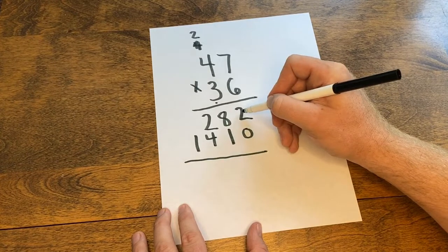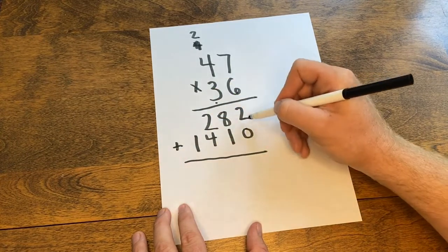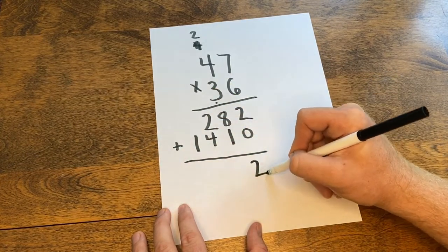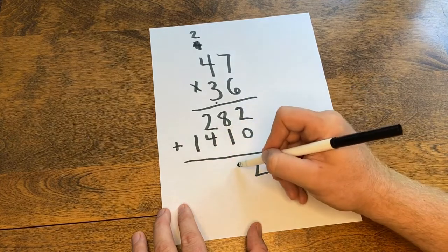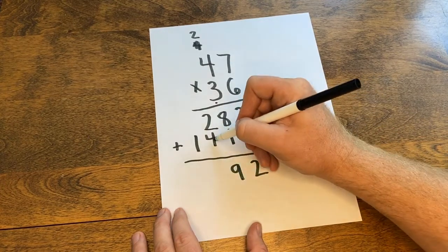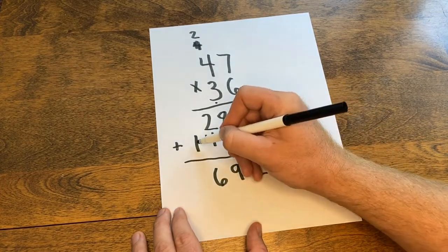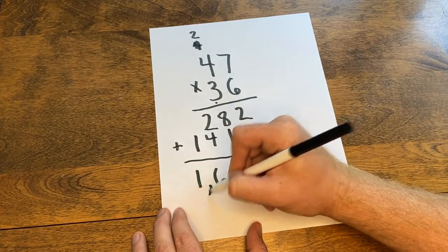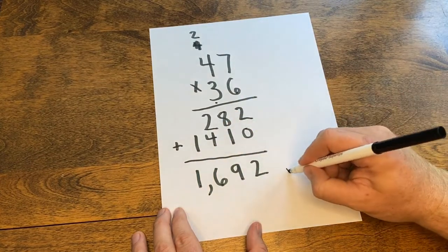Our last step here is to add up our two partial products. Two plus zero is two. Eight plus one is nine. Two plus four is six. And one plus nothing is one. So our product is 1692.